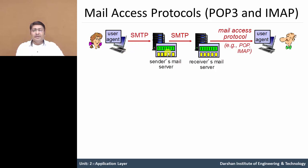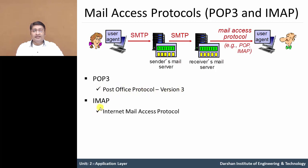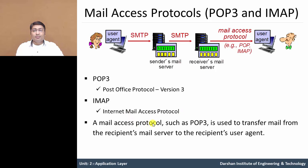In this figure, it is similar to the SMTP protocol working. Now, POP3 and IMAP protocol access the receiver mail server message and retrieve it on the user agent. For that, we need POP3 — the Post Office Protocol version 3 — and IMAP, which is the Internet Mail Access Protocol. So a mail access protocol such as POP3 or IMAP is used to transfer a mail from the receiver mail server to the receiver user agent.